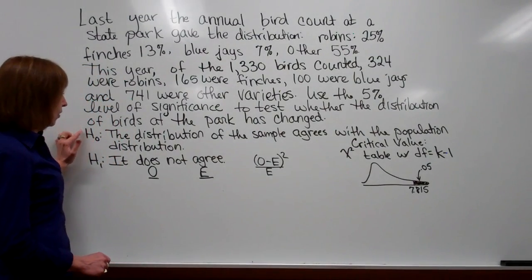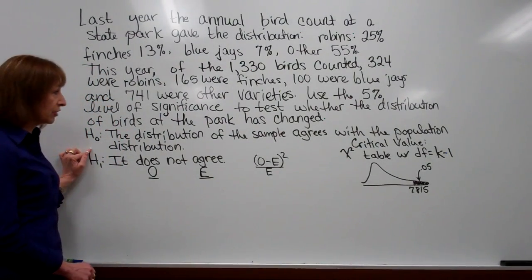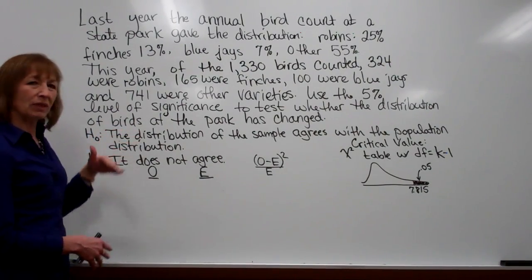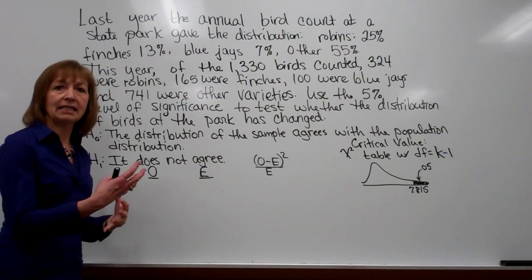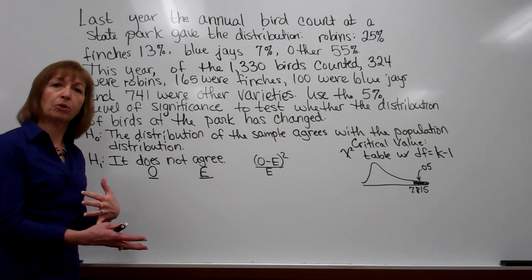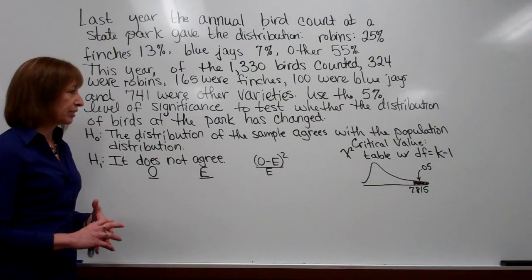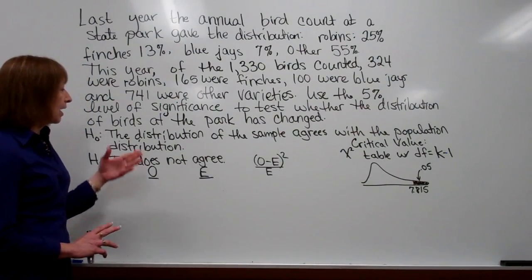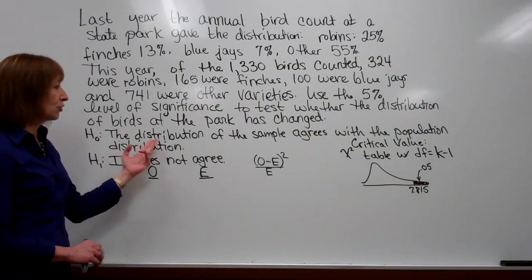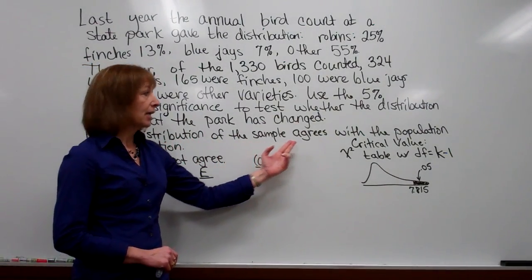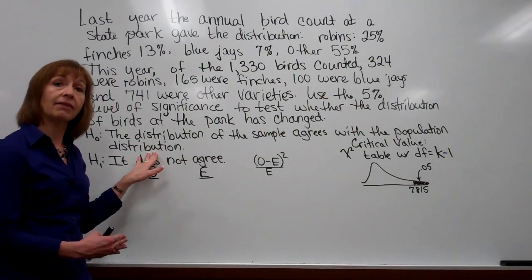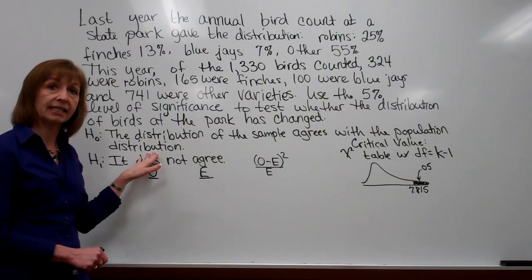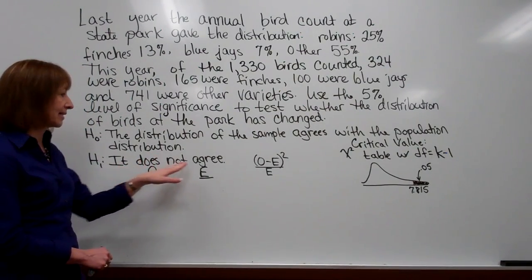Now setting up the null and alternate hypotheses for these sorts of questions pretty much has the same sort of wording that goes for each of them. Notice we don't list a parameter specifically that is equal to a specific number, nor do we have the choice for the alternate hypothesis with our inequalities or not equal to. The null hypothesis is: the distribution of the sample agrees with the population distribution. The alternate hypothesis is that it does not agree.